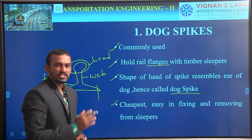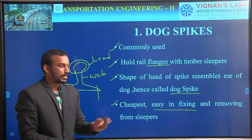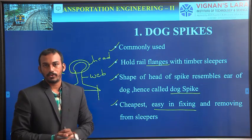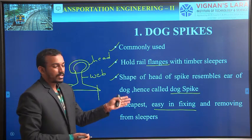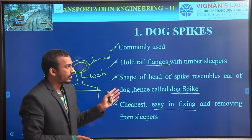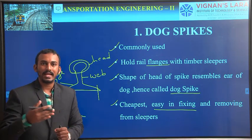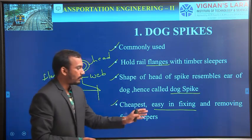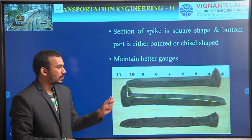Dog spikes are the cheapest and easy in fixing and also easy to remove from sleepers. These are available at very low cost and can be easily assembled and removed from the sleepers. But the main drawback of dog spikes is they get loosened during vibrations or during impact loads. For railway engineering, impact and vibration loads are very common. When the train moves over the rails, vibrations and impacts are generated, and because of those, dog spikes may get loosened because there is no threading system.